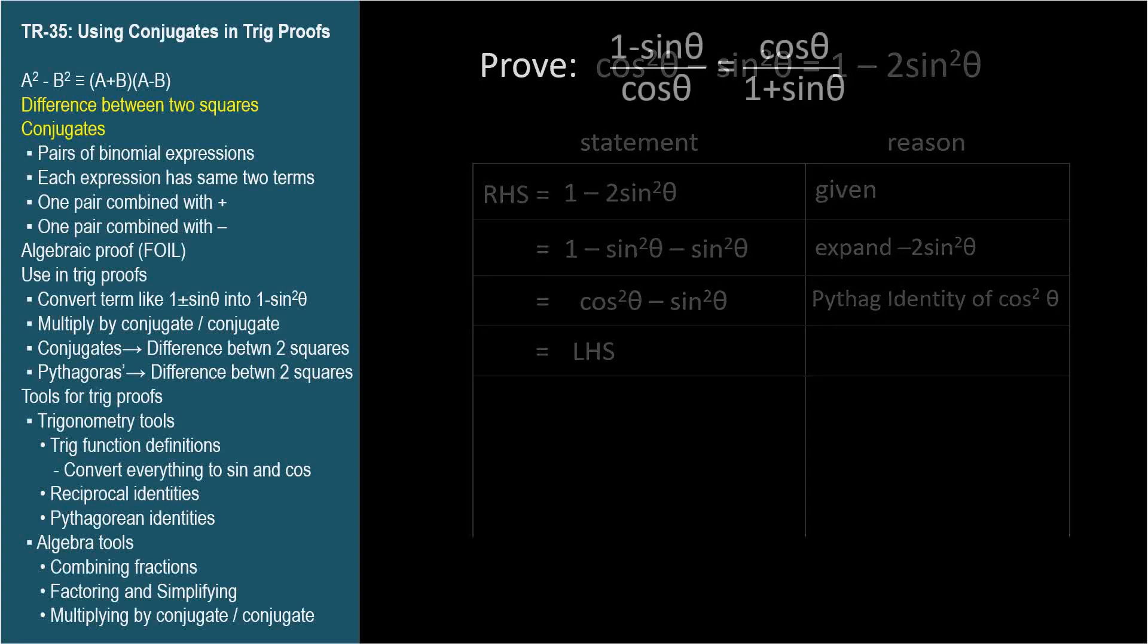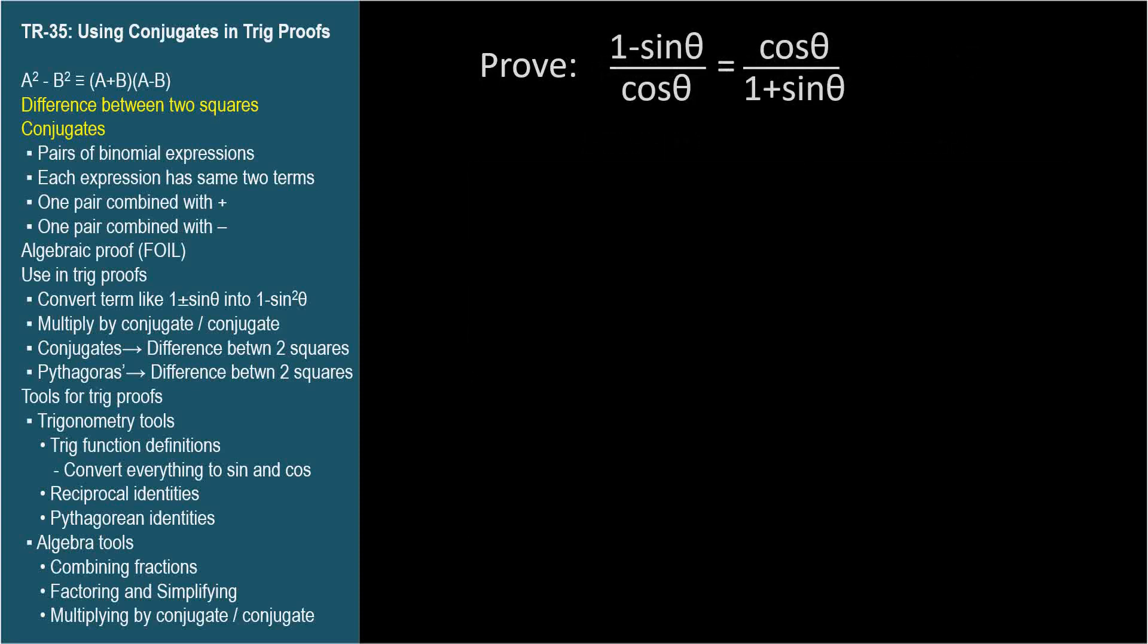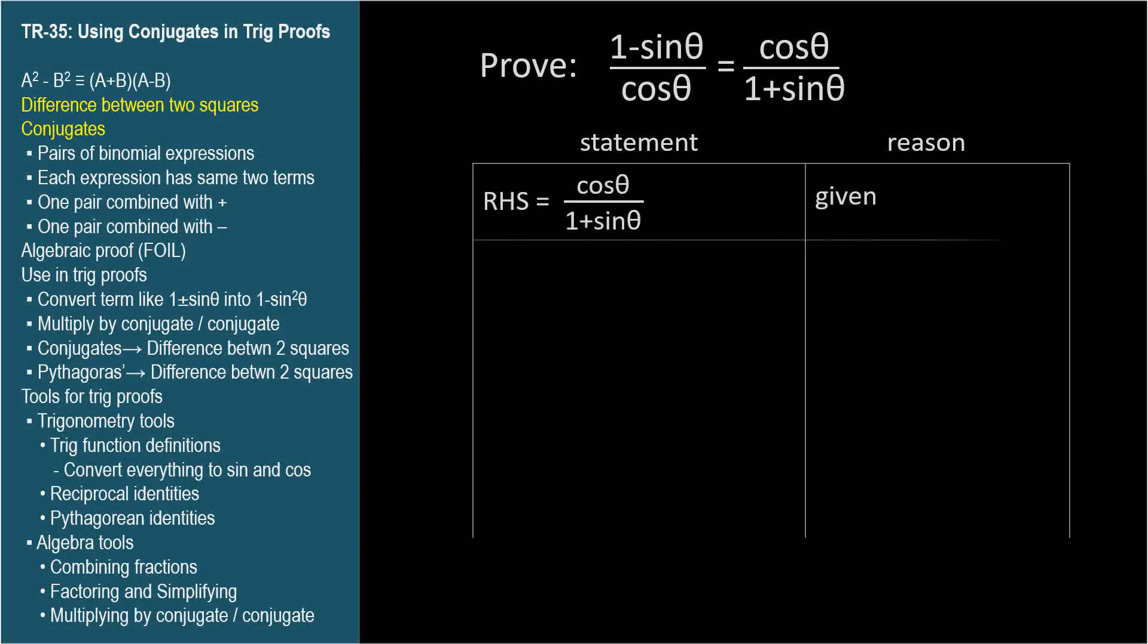Let's do another proof with conjugates. Prove 1 minus sine theta divided by cosine equals cosine divided by 1 plus sine theta. We usually manipulate the most complicated looking expression, but these two look similar. So we can choose either one. I'll choose the right-hand side. The denominator looks like it's inviting us to multiply by its conjugate. So we'll multiply numerator and denominator by 1 minus sine theta. That gives us cosine theta times 1 minus sine theta divided by 1 plus sine theta times 1 minus sine theta.